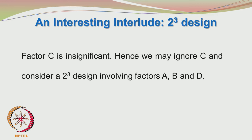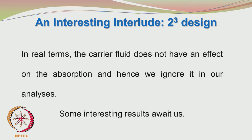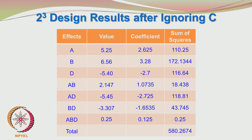Factor C is insignificant, so we may ignore C and consider the design as a 2³ design involving only factors A, B, and D. We are using the first fraction itself as a 2³ design involving A, B, and D. The carrier fluid does not have an effect on the absorption and hence we ignore it. When you ignore C, you get the following effects: ABD, AB, AD, BD, and ABD, along with the values, coefficients, and sum of squares.